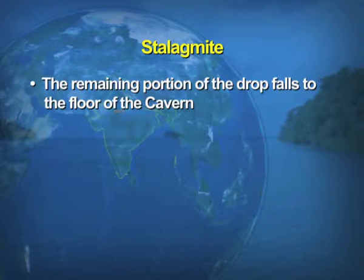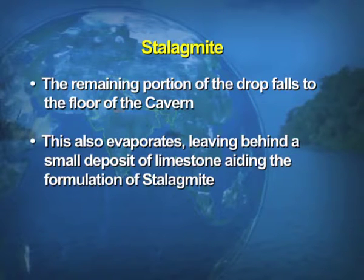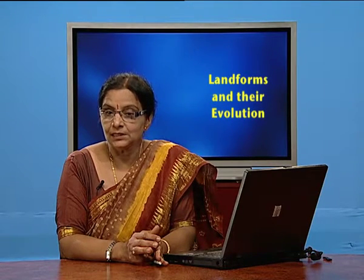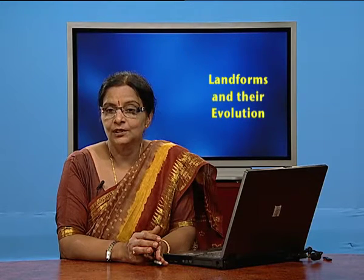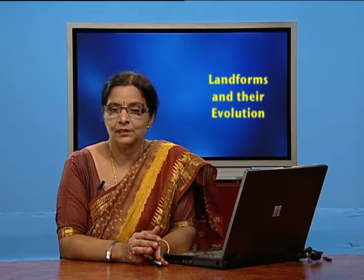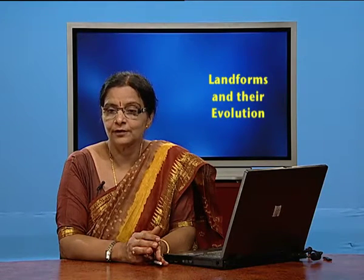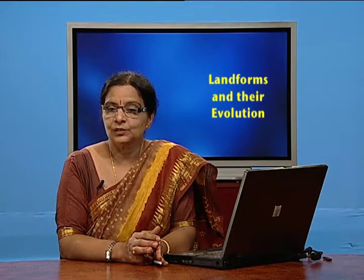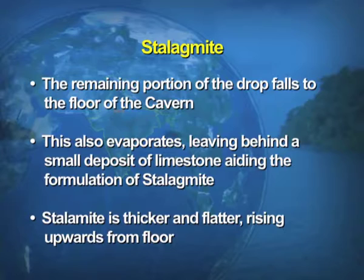The remaining portion of the drop falls to the floor of the cave, also evaporates, leaving behind a small deposit of limestone, aiding the formation of the stalagmite. Since stalagmites are formed from the bottom towards the top — bottom being the floor and top towards the roof — stalagmites are thicker and flatter, rising upward from the floor.